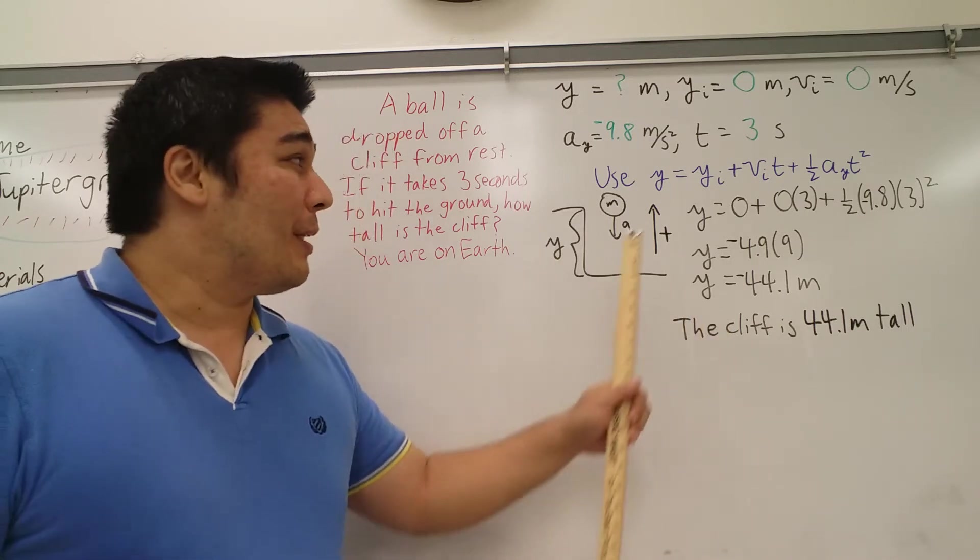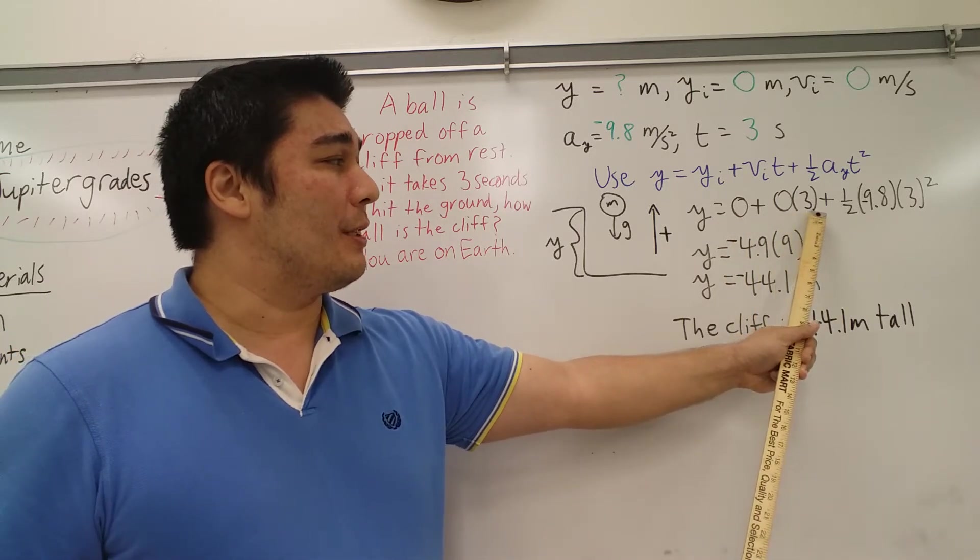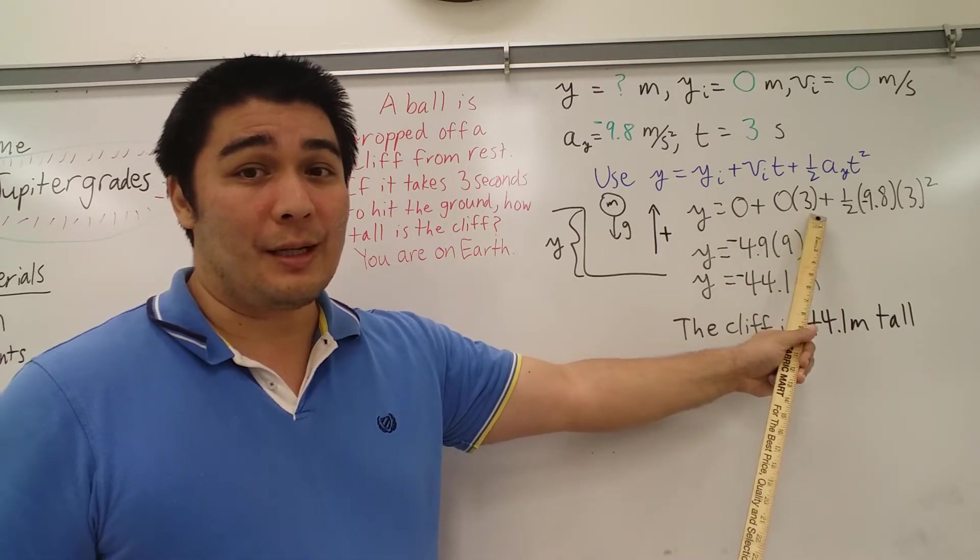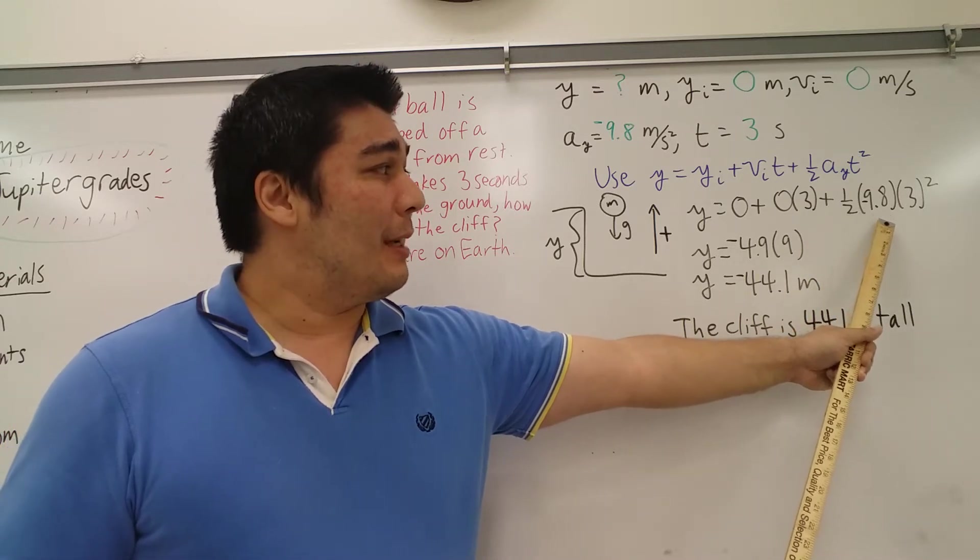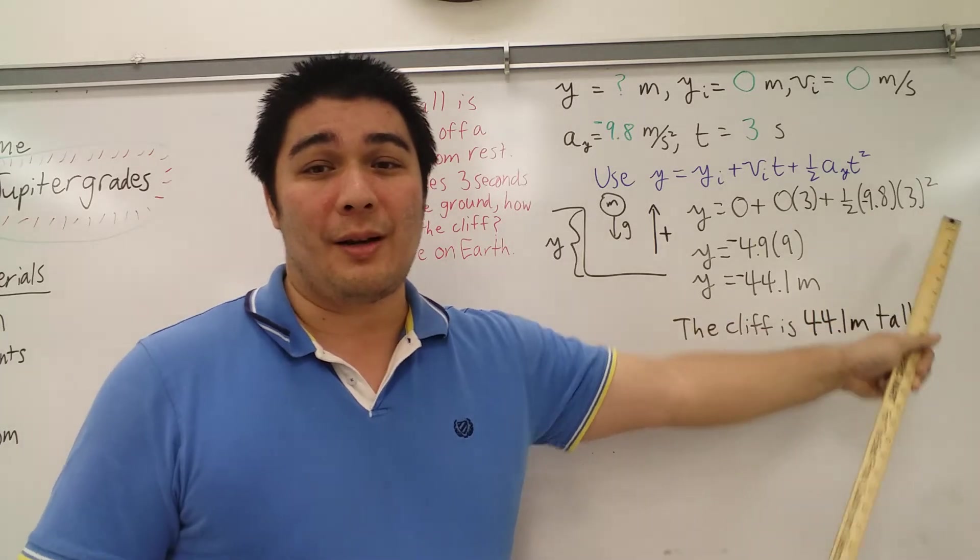So here we go. y initial is zero, so I put in a zero. v initial is zero, so I put in a zero. The time is three, so I put in that. One half. But this time, it's negative 9.8 times three quantity squared.